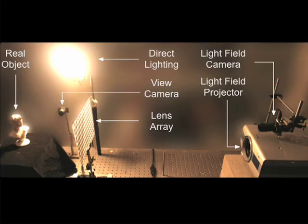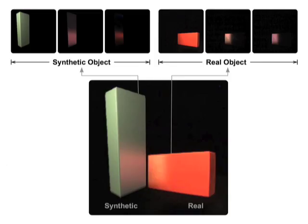In our experimental setup, we use a lens array to multiplex 4D light fields into 2D images that are captured and projected. Because our algorithm iteratively transfers indirect lighting, we can pause computation and infer the contribution of individual bounces.